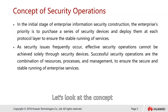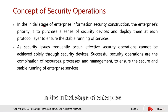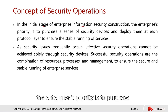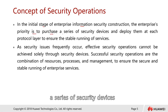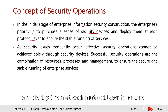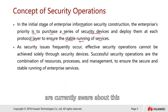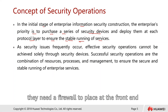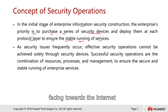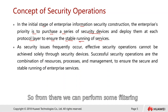Let's look at the concept of security operations. In the initial stage of enterprise information security construction, enterprises' priority is to purchase a series of security devices and deploy them at each protocol layer to ensure the stable running of services. Most organizations are currently aware that they need a firewall placed at the front end — the machine facing towards the Internet — since there are so many threats coming from the Internet, and from there we can perform some filtering.